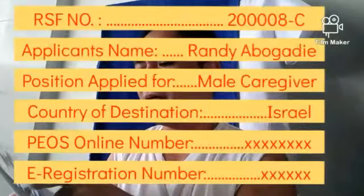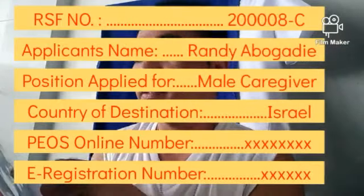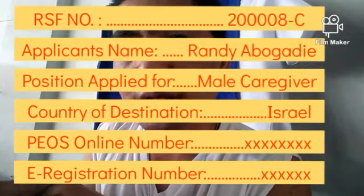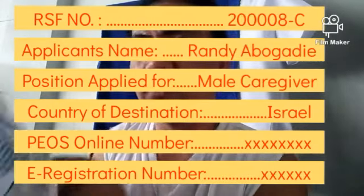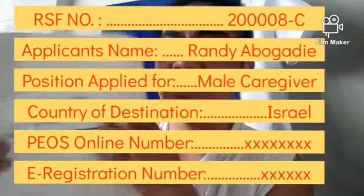There on the cover is the RSF number, applicant's name, position applied for, counter destination, POS online number, and registration number. You will write that. It's up to you, guys, whether you pre-print it out or write it by hand.